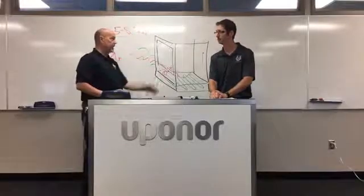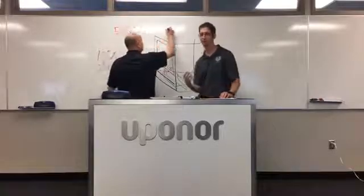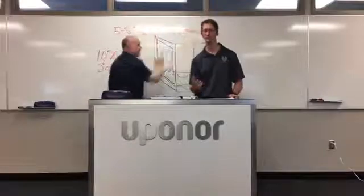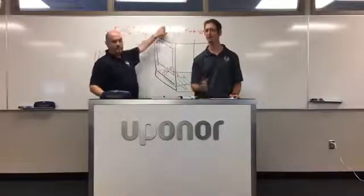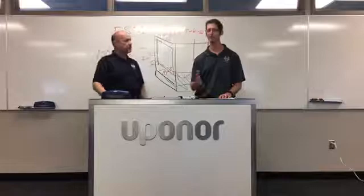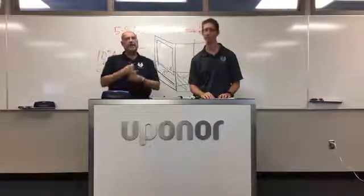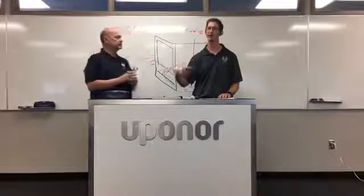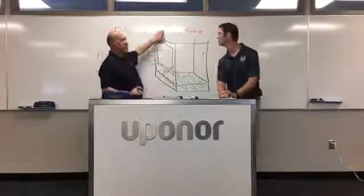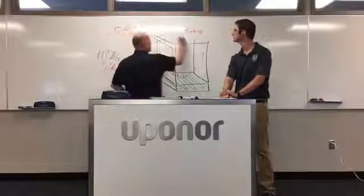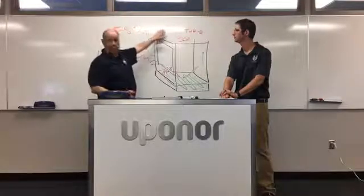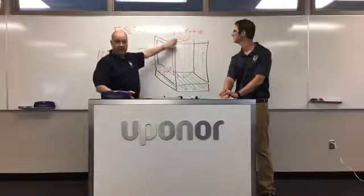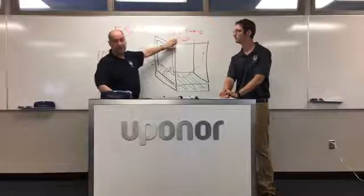We can compensate by switching from half-inch tubing to five-eighths inch tubing. As a rule of thumb, five-eighths or three-quarter inch tubing is a good benchmark for cooling — it keeps your circulators small and cuts down on energy consumption over the lifetime of the system. Shorten your loop lengths to 300 feet for five-eighths tubing; in heating we run up to 450 feet, but 300 feet makes your pump work less.